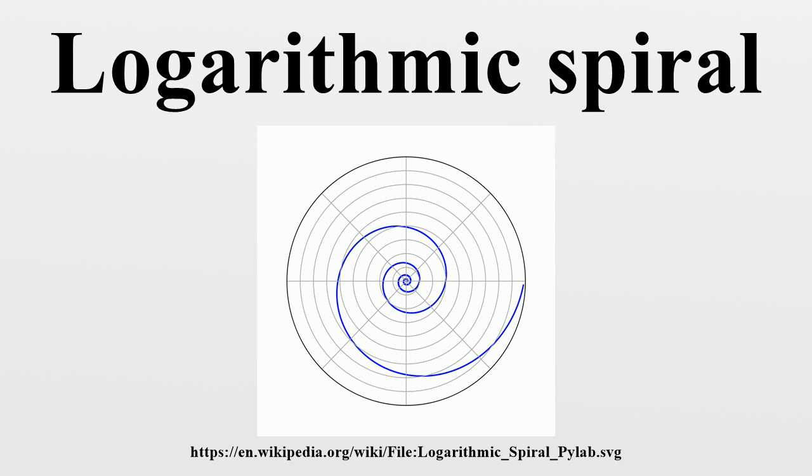Properties: The logarithmic spiral can be distinguished from the Archimedean spiral by the fact that the distances between the turnings of a logarithmic spiral increase in geometric progression, while in an Archimedean spiral these distances are constant.